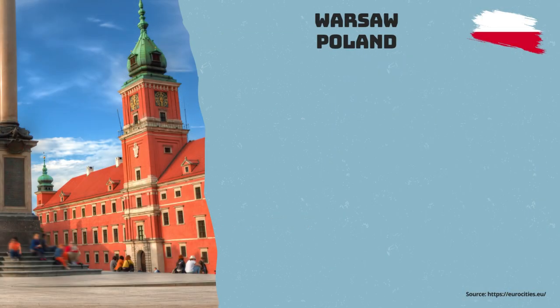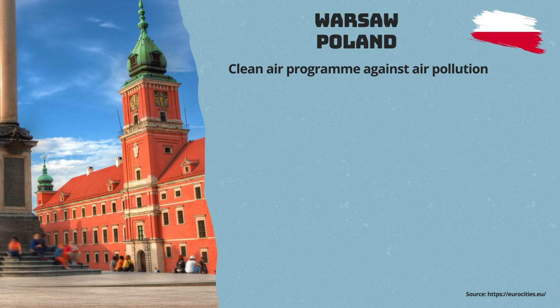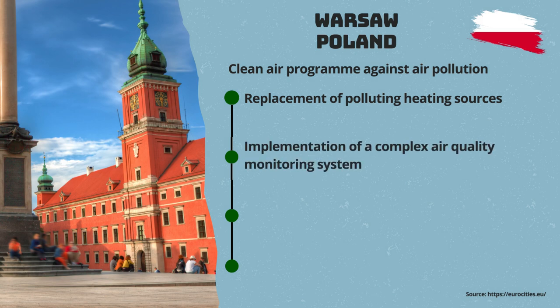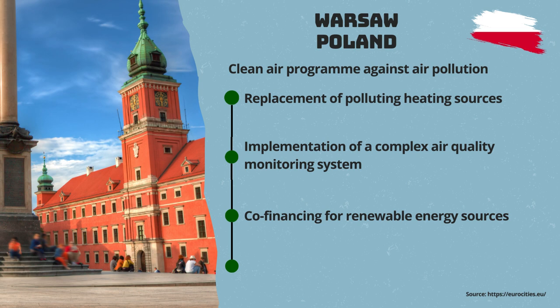Warsaw, Poland: Warsaw, the capital of Poland, initiated in 2018 the Clean Air Program to tackle the problem of air pollution. The priorities include replacement of polluting heating sources with more modern and environmentally friendly boilers; implementation of a complex air quality monitoring system; co-financing for renewable energy sources such as photovoltaic installations, solar thermal collectors, or wind turbines; and expansion of the urban transport network with electric buses, bike sharing, and development of bicycle and bus lanes.